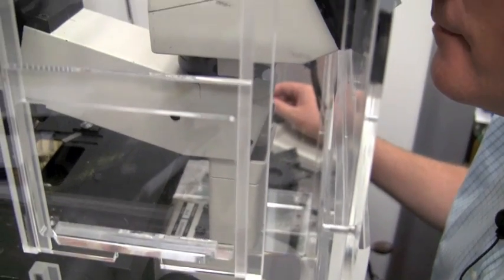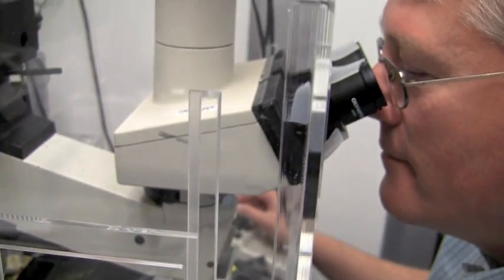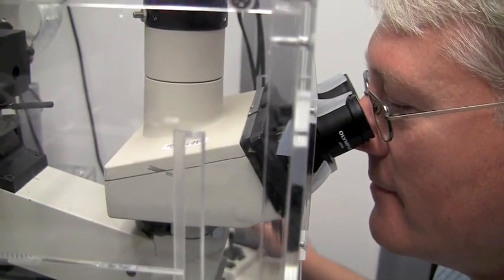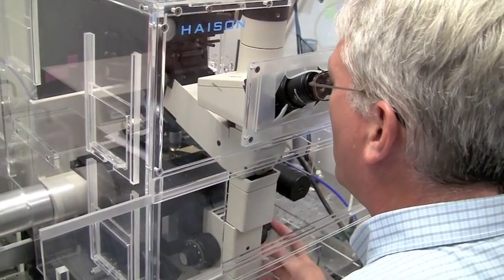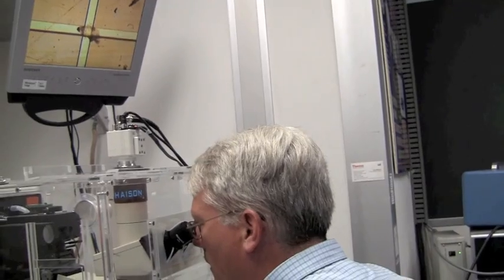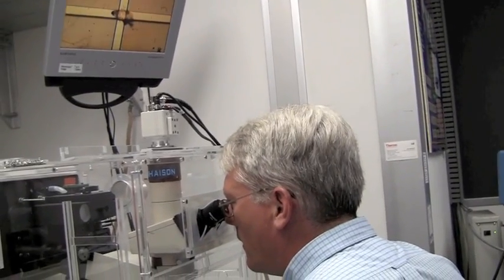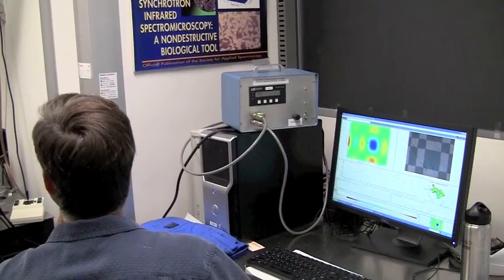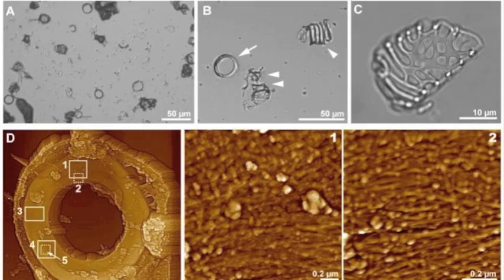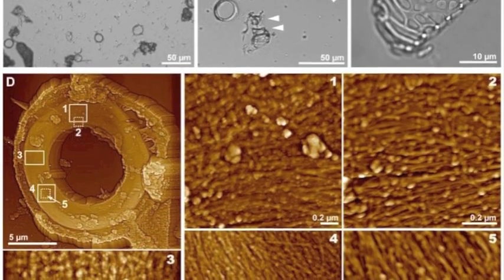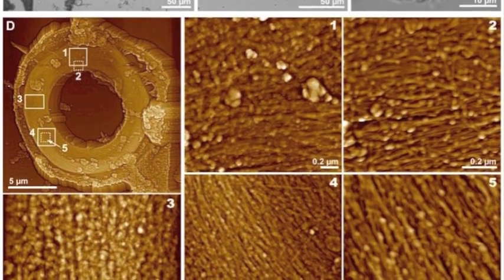What's special about doing infrared at the synchrotron is that we're really using the high brightness of the electron beam to focus down the light to a diffraction-limited spot size in the infrared. So we can use all the advantages of traditional FTIR, but also be able to look at samples that are down at the 2 to 10 micron size scale.